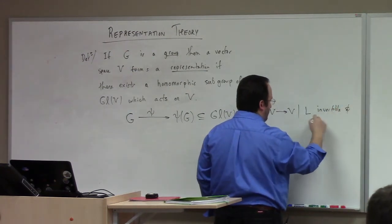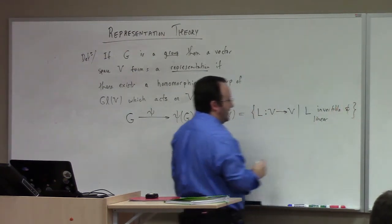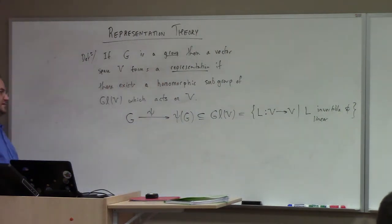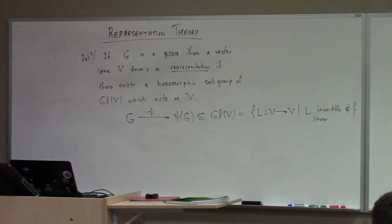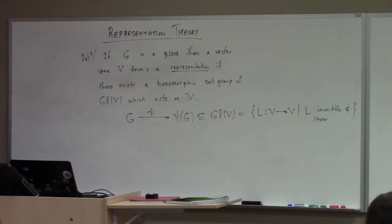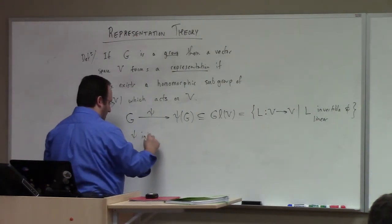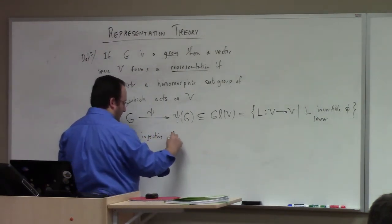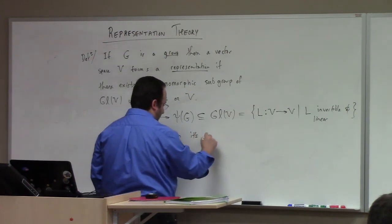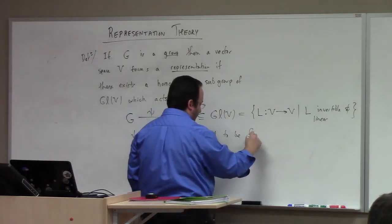And of course, linear. So this is what's called a representation of a group. It's a set of invertible linear transformations on some vector space which has the same sort of shape as the group, if you will. If this homomorphism — if psi is injective — then it's said to be a faithful representation.